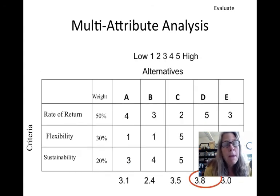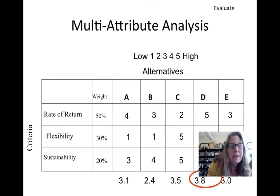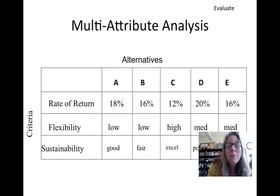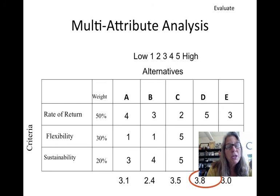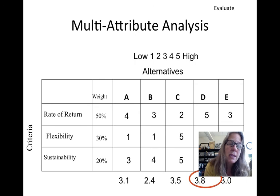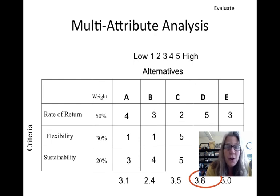Another method is a scoring approach. You score all alternatives — for instance, alternative D has a 20% rate of return and scores a 5, while C had a low rate of return and scores a 2. You equalize the scores across criteria, then assign a weight to each criterion. Rate of return gets a 50% weight, flexibility 30%, and sustainability 20%. You then compute a weighted average. In this case, D has the highest score, leading you to further investigate or select it. This is an additional tool used in project decision making.